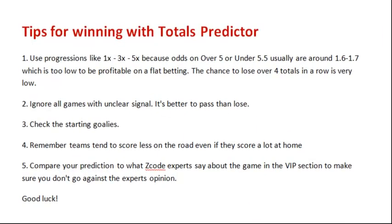Here are some important tips about winning with the totals predictor. Use progressions like 1x, 3x, 5x because the odds on over 5 or under 5.5 are usually around 1.6 to 1.7, which is too low to be profitable on flat betting. The chance to lose over 4 totals in a row is very low. Ignore all games with an unclear signal — it's better to pass than to lose. Check the starting goalies. Remember, teams tend to score less on the road even if they score a lot at home. And most importantly, compare your predictions with the Z-Code experts and read what they say in the VIP section to make sure you don't go against the experts' opinions. We wish you good luck and I hope you succeed with our great Z-Code tools.